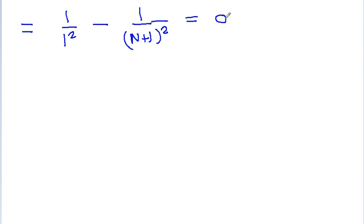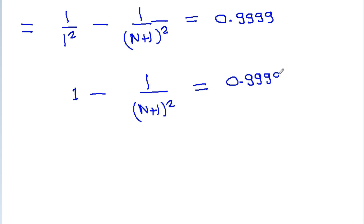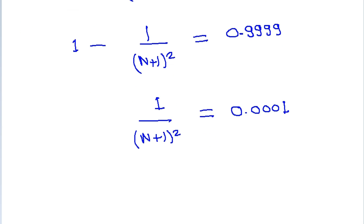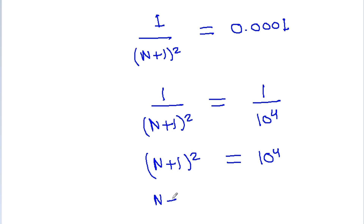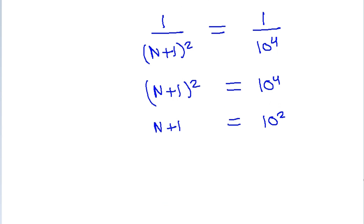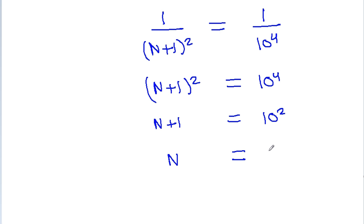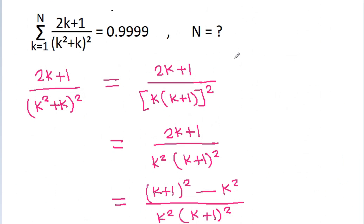This equals 0.9999, so 1 − 1/(n+1)² = 0.9999. Therefore 1/(n+1)² = 1 − 0.9999 = 0.0001, which is 1/10⁴. So (n+1)² = 10⁴, meaning n+1 = 10² = 100, and n = 100 − 1 = 99. So n is equal to 99.